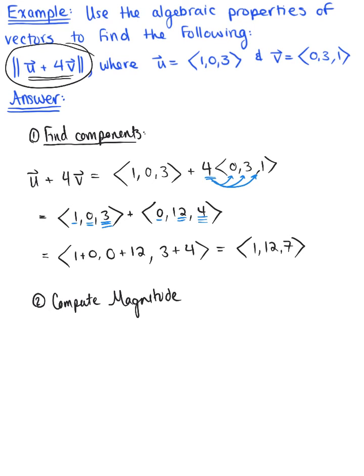We want to find the length of this vector. We have the magnitude of vector u plus 4 times vector v, which is the magnitude of the vector <1, 12, 7>.